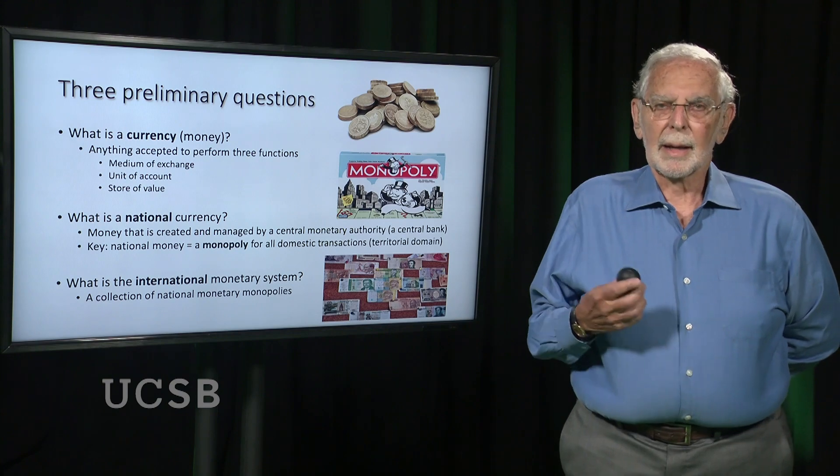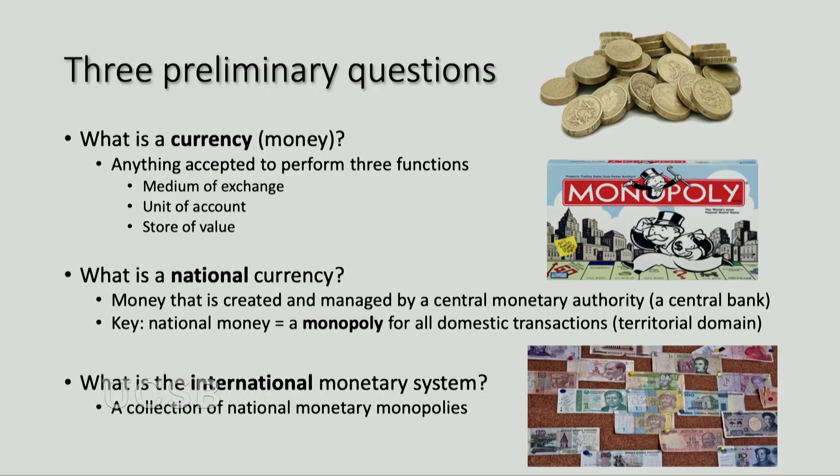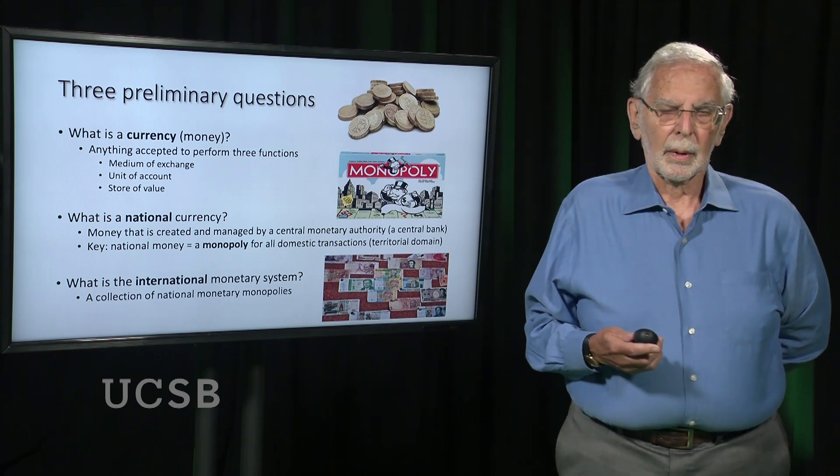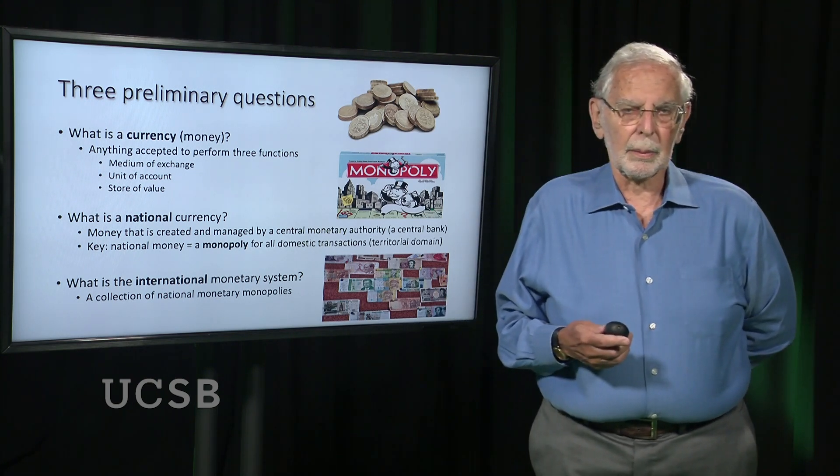The second thing we need to mention is national currency. As I said, there are many things that can perform the functions of money, but the dominant form of money is what we call national money — money that is issued by a government, specifically by the National Monetary Authority, or what we call a central bank. In the United States that's the Federal Reserve; in Britain it's the Bank of England; in Japan, the Bank of Japan; in China, the People's Bank of China. A government issues a national money and does everything it can through laws and regulations to ensure that its money retains a monopoly within the territorial frontiers of the state.